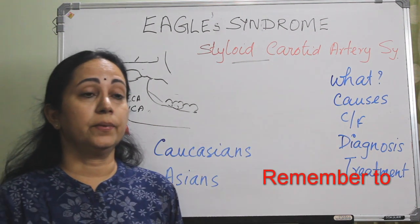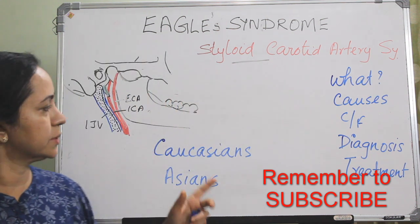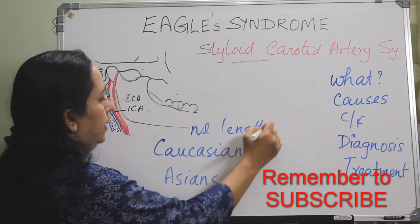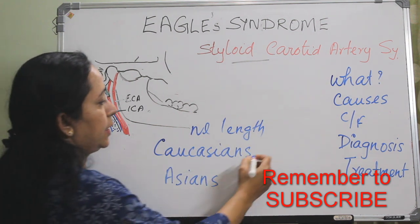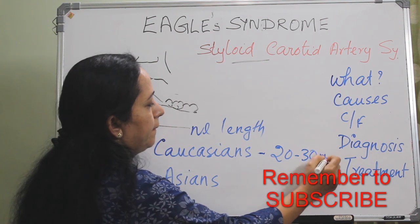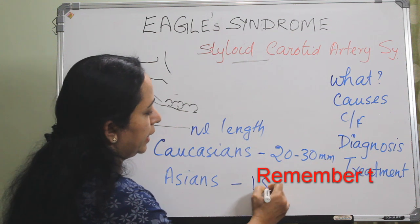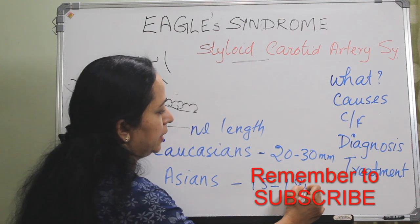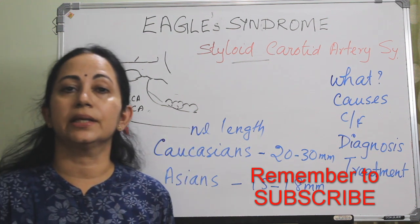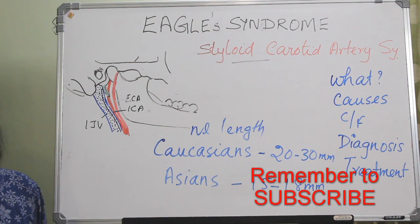Before talking about the elongated styloid process, what is the normal length? In Caucasians it is around 20 to 30 millimeters, and in adult Asians it is around 15 to 18 millimeters. A length of more than 30 millimeters, or more than 3 centimeters, is taken as an elongated styloid process.